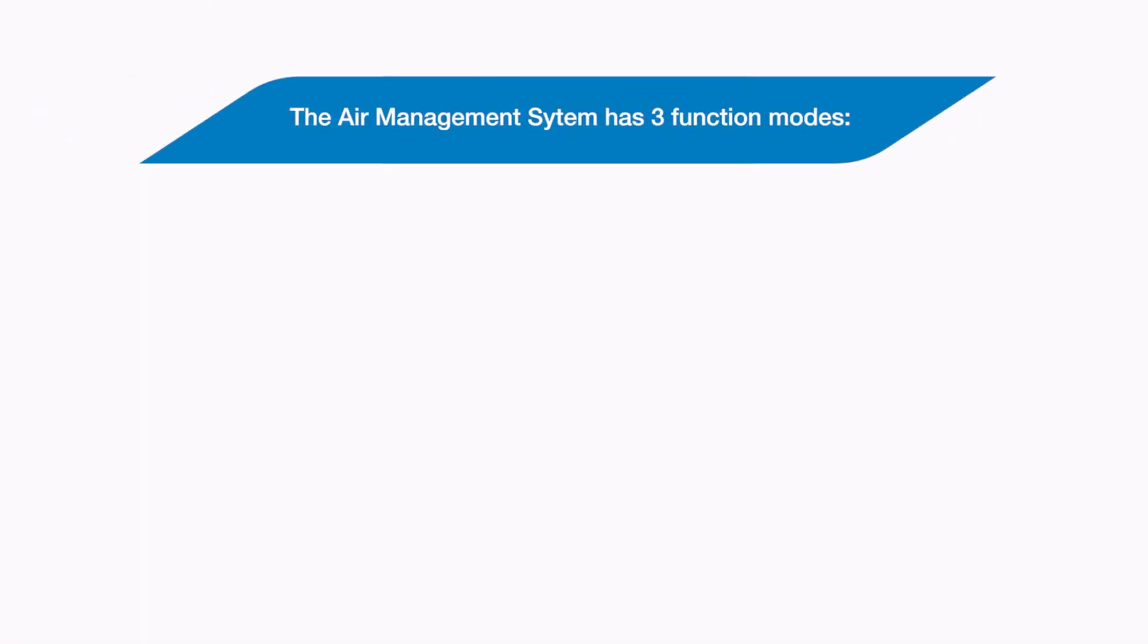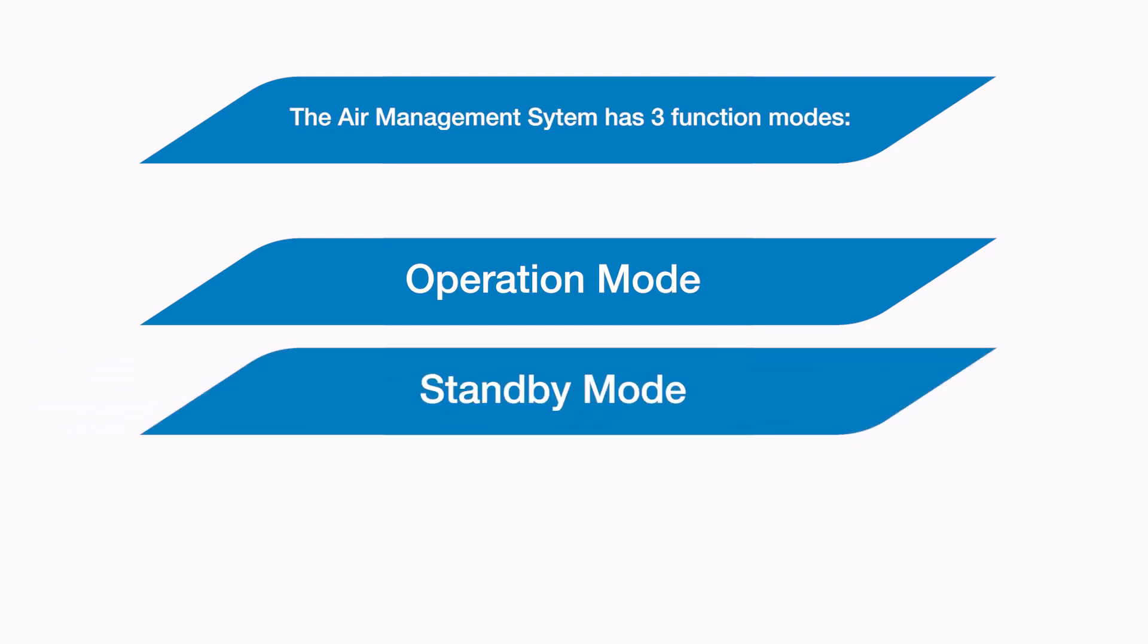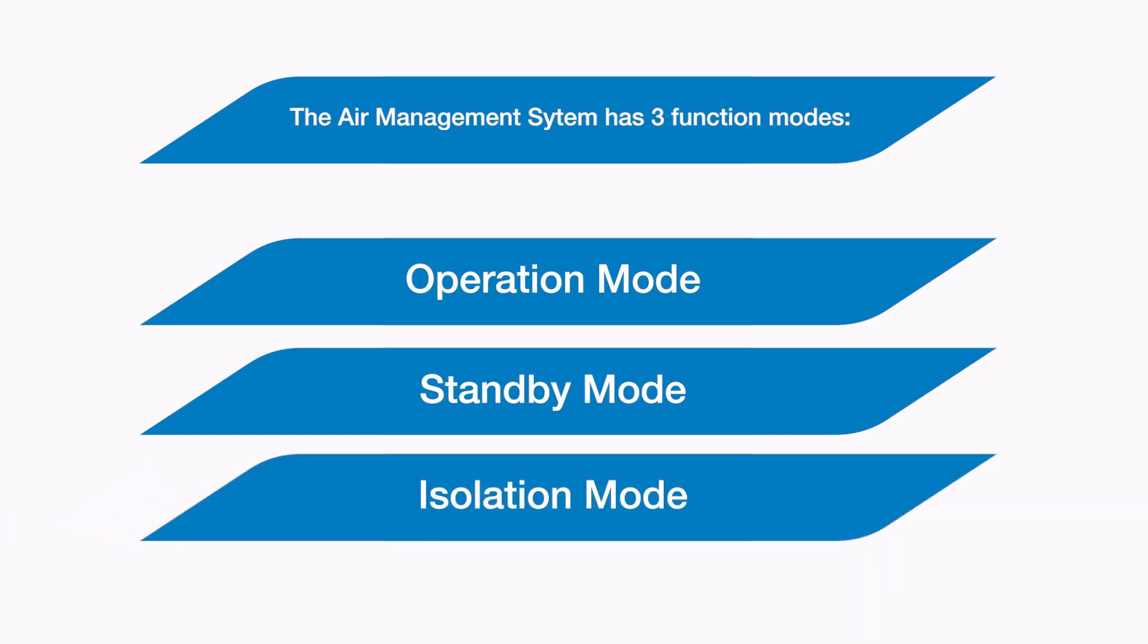The air management system has three function modes. Operation mode, this is when your machine is working normally as if the air management system were not fitted at all. Standby mode controls the air at a lower pressure for when your production has stopped and the machine is in an idle condition. And finally isolation mode which allows you to isolate and exhaust the downstream pressure if you want to.